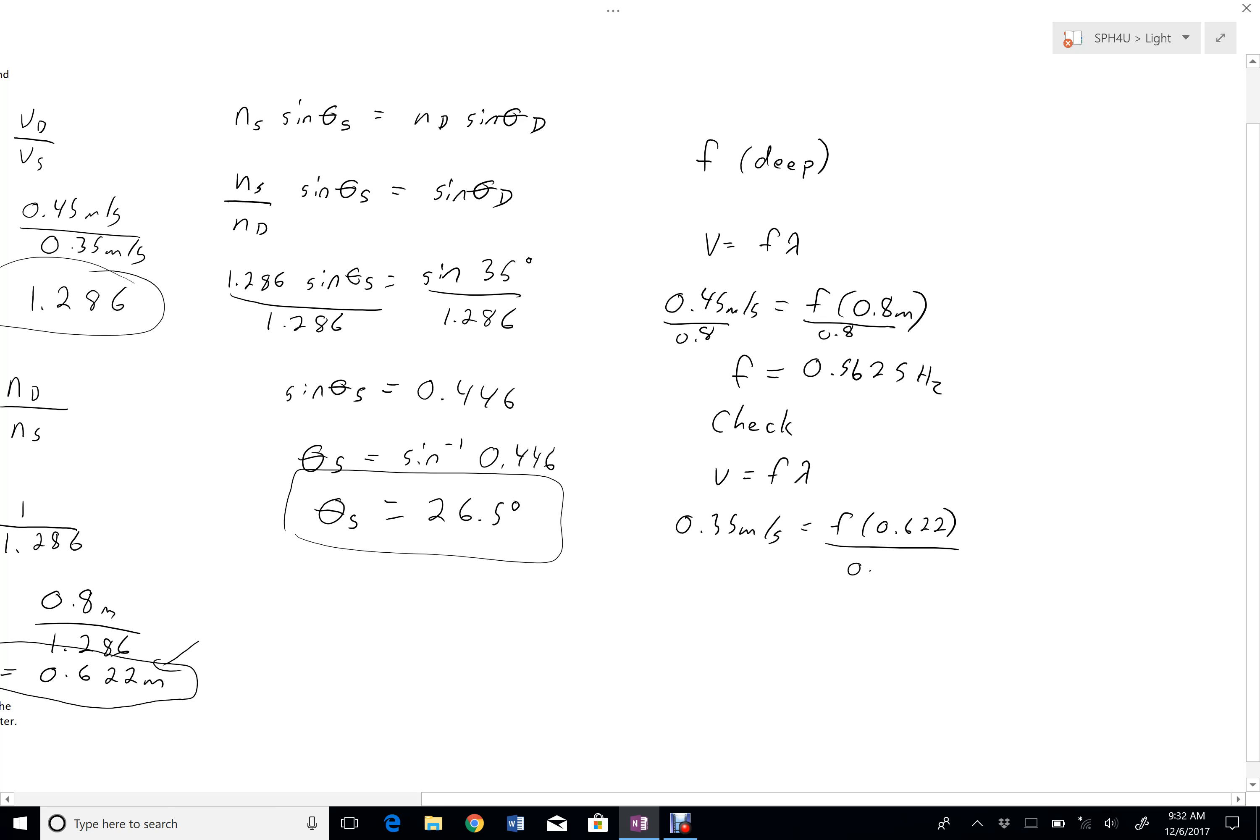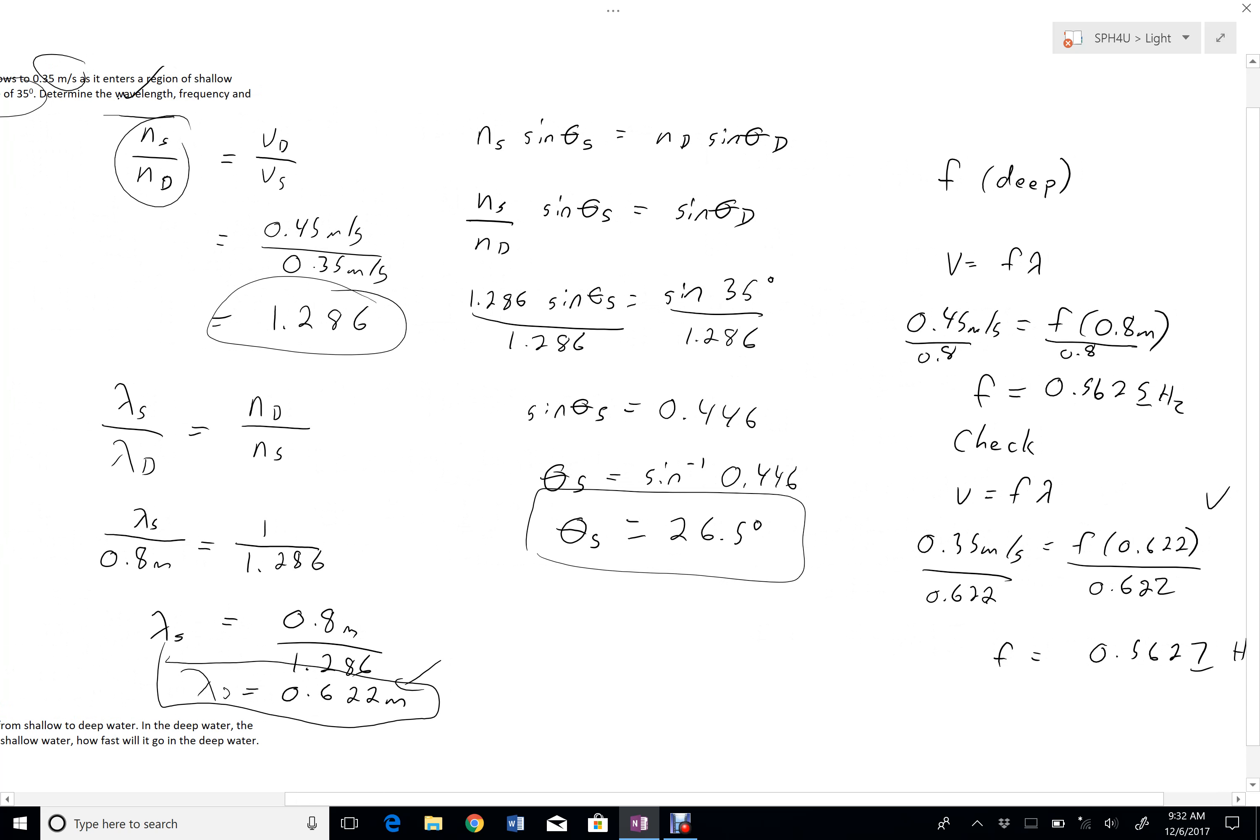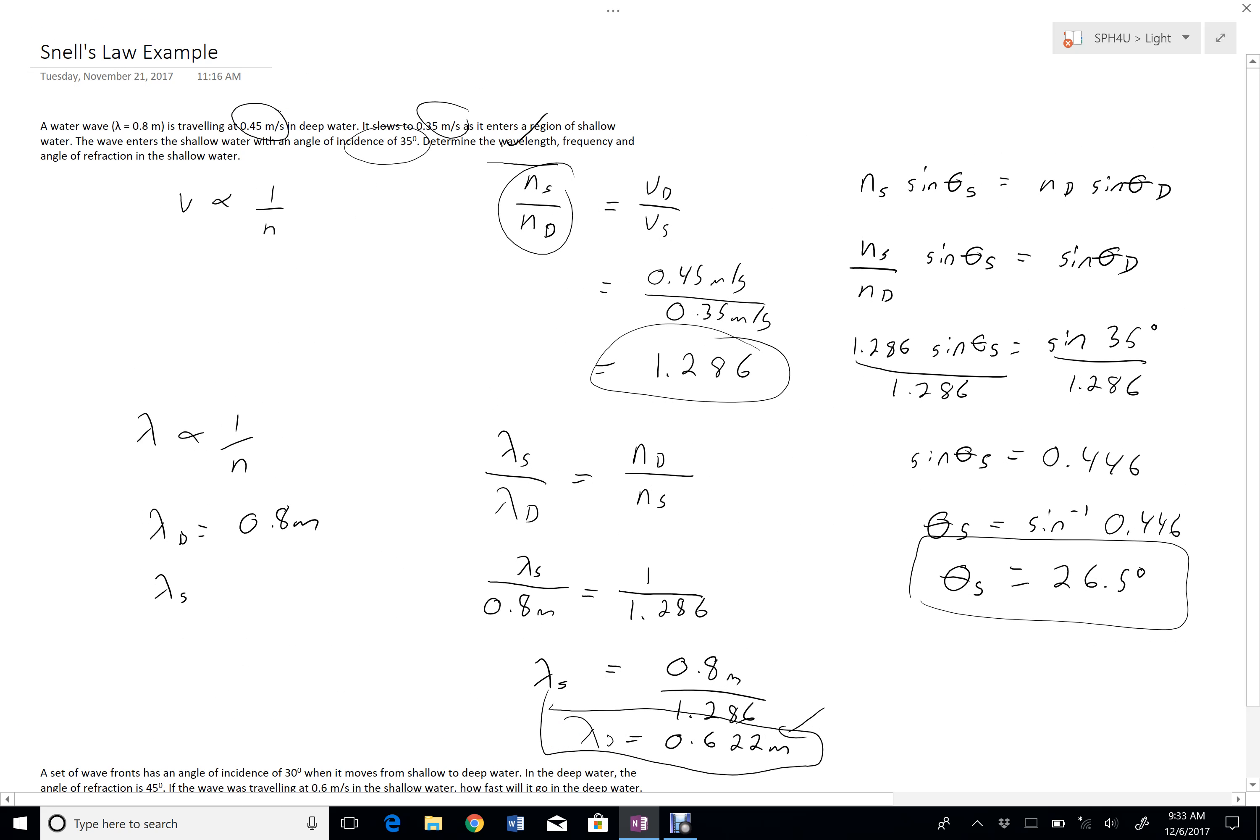So if I've done this right, then my frequency should work out to be the same thing. And I got 0.5627. The difference here is just a rounding difference. And so my check shows that when I found this wavelength, I did that correctly.